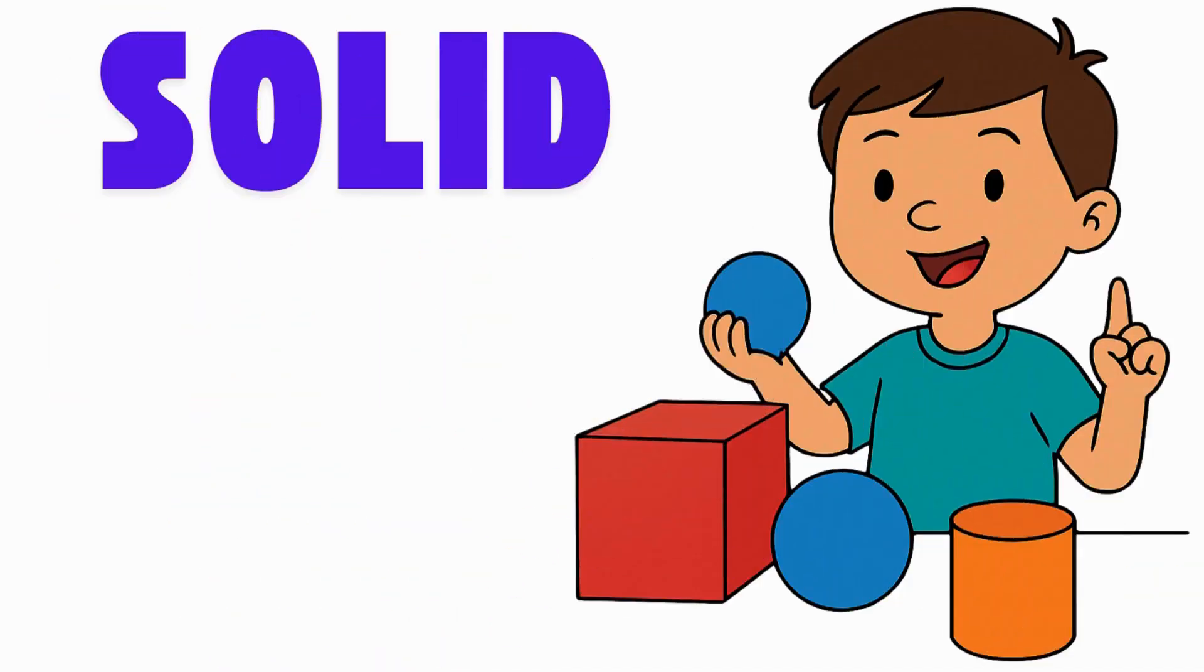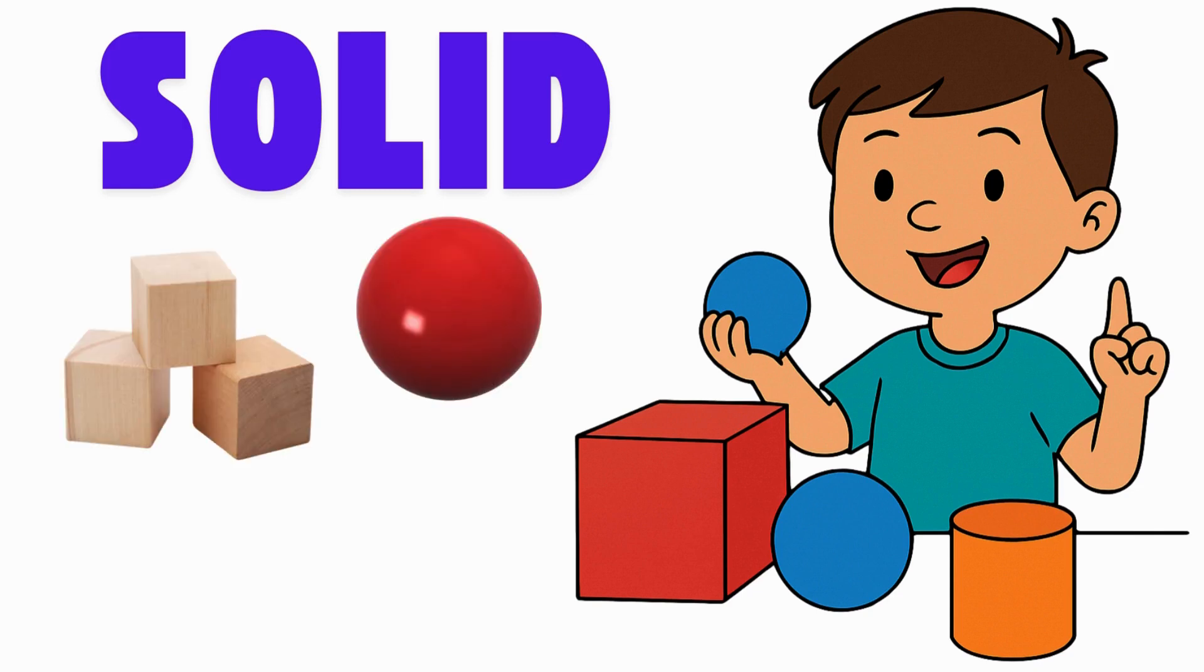A solid is a shape that is not flat. We say it is three-dimensional. You can hold it in your hands. It takes up space. Solid shapes include cubes, spheres, and cylinders.